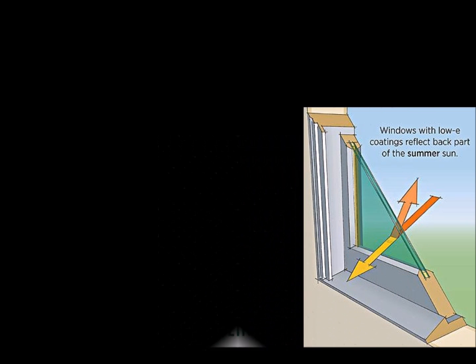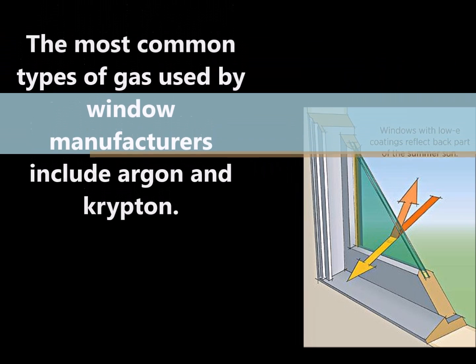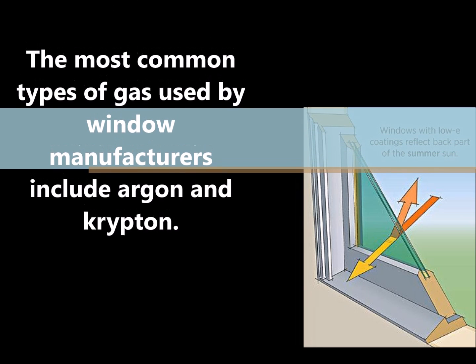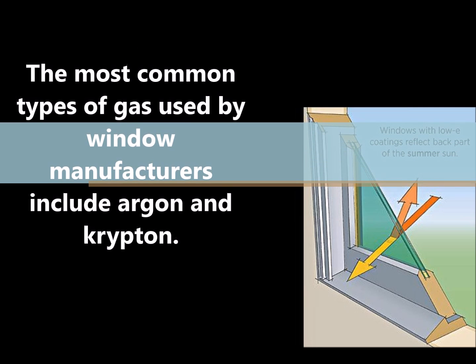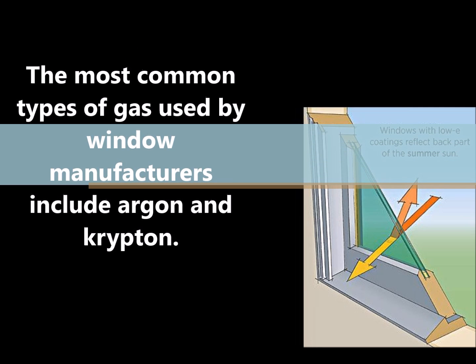The most common types of gas used by window manufacturers include argon and krypton. Argon is inexpensive, non-toxic, non-reactive, clear, and odorless. Krypton is more expensive but has better thermal performance. Next, we look at tinted windows, heat absorbing glazing or glass.